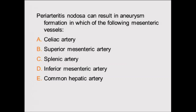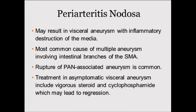Periarteritis nodosa can result in aneurysm formation in which of the following vessels? A: celiac artery. B: superior mesenteric artery. C: splenic artery. D: inferior mesenteric artery. E: common hepatic artery. The answer is B, SMA. Periarteritis nodosa is an inflammatory destruction of the media. Most commonly it affects the SMA. Treatment is steroids and cyclophosphamide — it's not a surgical problem.